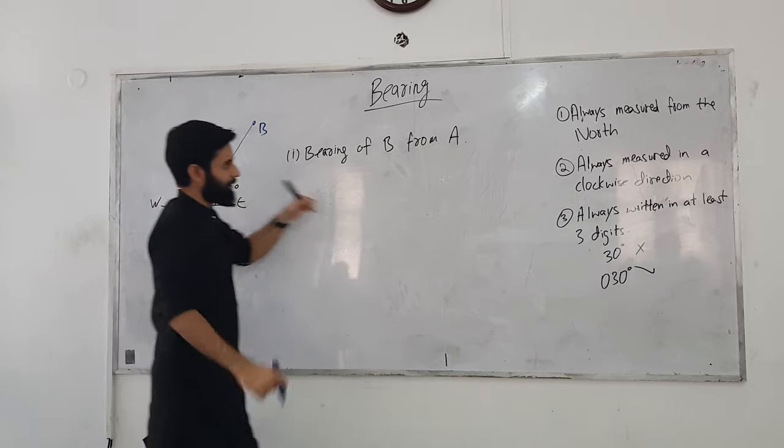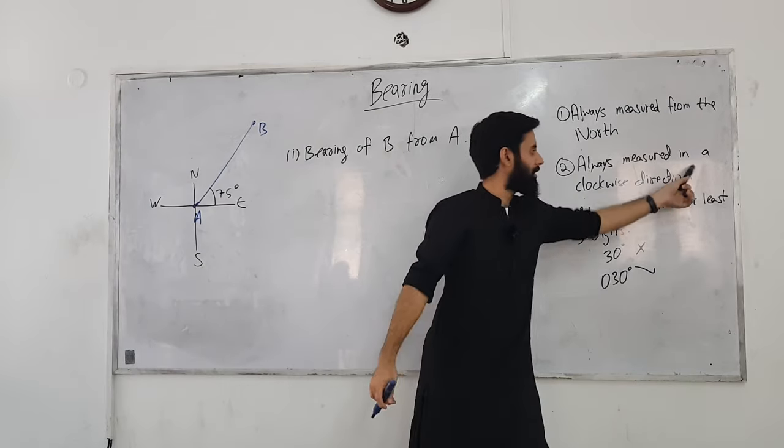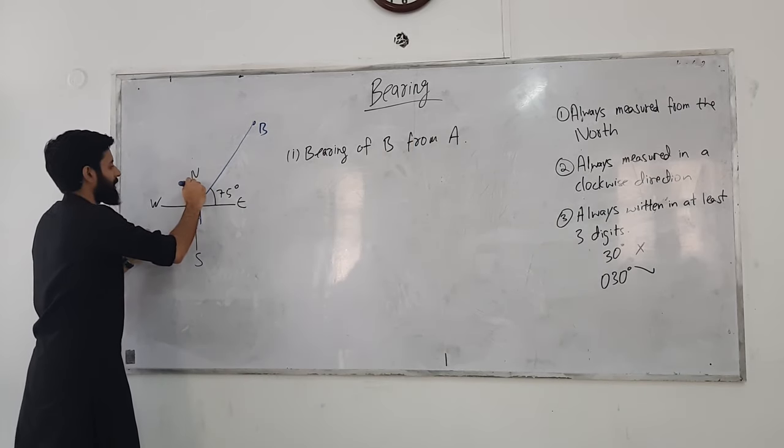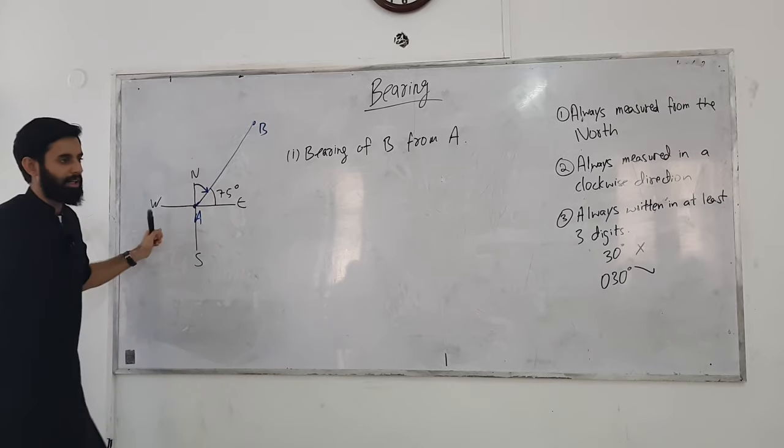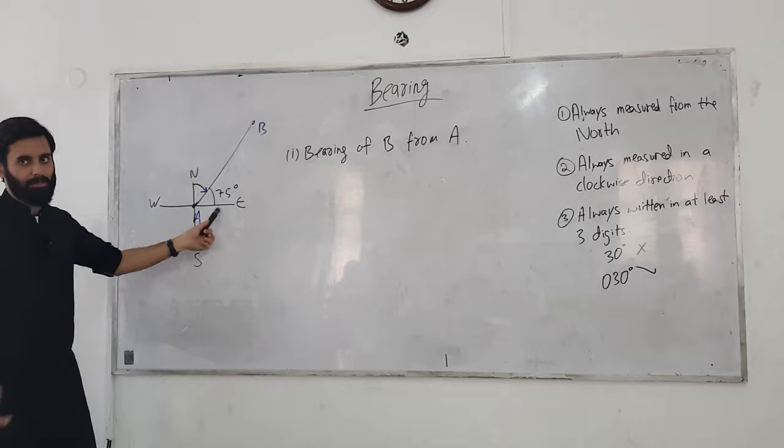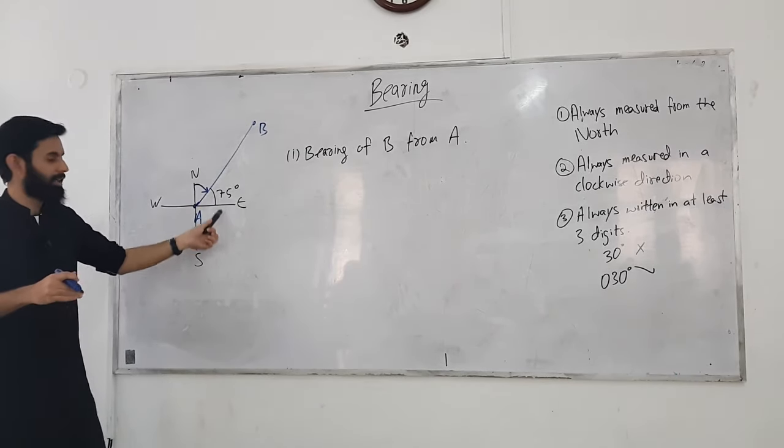Now, what do we do? Now, we measure from A to North in a clockwise direction. And clockwise direction we measure until we reach that line that we will take from A to B. Will we take this line from A to B? Okay, now north and east, they are perpendicular to each other. So, that means the angle will be 90.